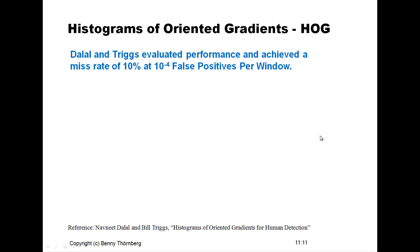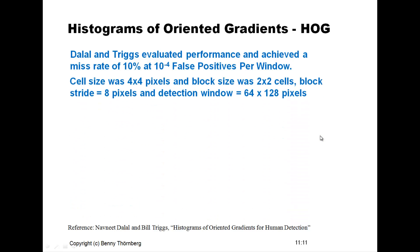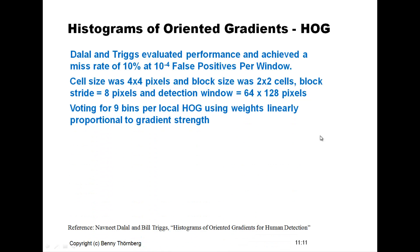Dalal and Triggs claim to achieve optimal performance of their method at a miss rate of 10% with a false positive per window corresponding to 10 to the power of minus four. These results were achieved at a cell size of four by four pixels, a block size of two by two cells, a block stride of eight pixels, and a detection window of 128 by 64 pixels. The voting for the histograms used nine bins per local cell histogram, linearly proportional to the gradient strength — meaning stronger gradients have more importance in the final voting.